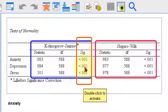But these are all less than 0.05, which means that the anxiety variable violated the assumption of normality, as did depression and stress. In other words, none of these are normal.